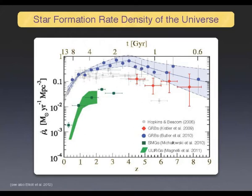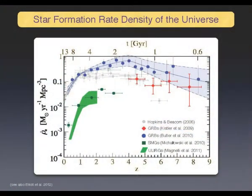Gamma-ray bursts will tell you something. If you want to know what happens with massive galaxies, these are sub-millimeter galaxies — the star formation rate given by sub-millimeter galaxies with large stellar mass, a lot of dust, and large objects is about 20% of the total, and it goes up with redshift. With ultraluminous infrared galaxies, if you go to even higher redshift, the contribution to the star formation rate density might be more important than at redshift lower than 2.5.